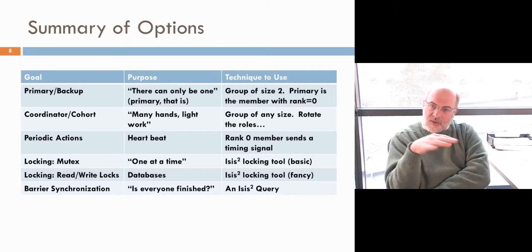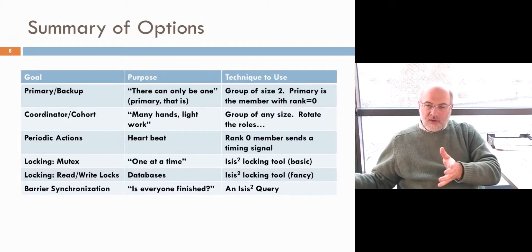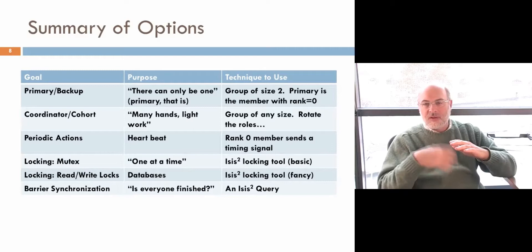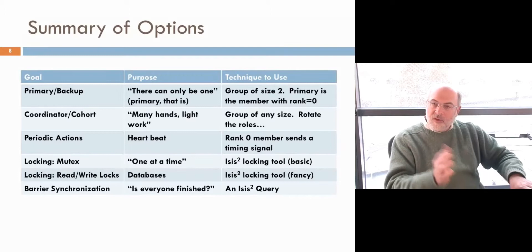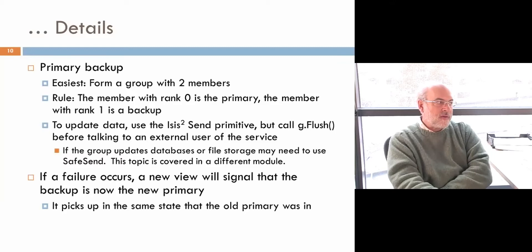The locking tool was built as a simple kind of a state machine that's fully replicated across the members of the group. Each new lock request enqueues itself on a list of pending requests for each given lock, and then as the lock becomes free, you look at the list and allocate the lock to whoever's next in line. You could build this yourself, except that we did it for you.